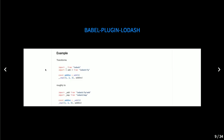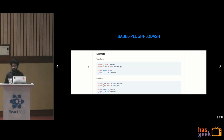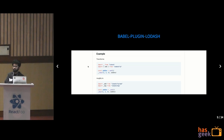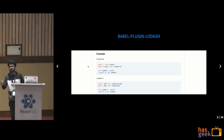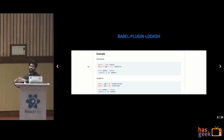Some production-ready plugins I use in my applications: one is `babel-plugin-lodash`. Majority of the time our final bundle is bloated because we're importing the entire Lodash library or underscore. This plugin will only import what you're using in your particular code and will not bloat your production bundle. This is a production-ready Babel plugin created with an understanding of ASTs.